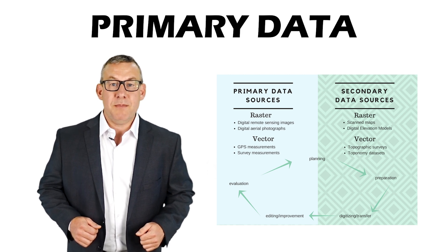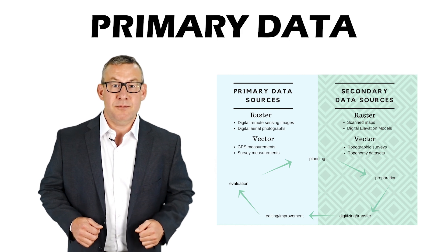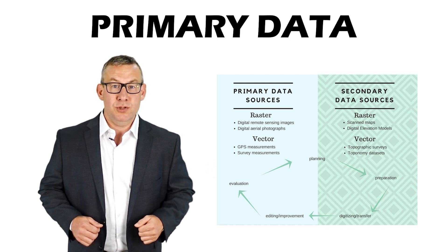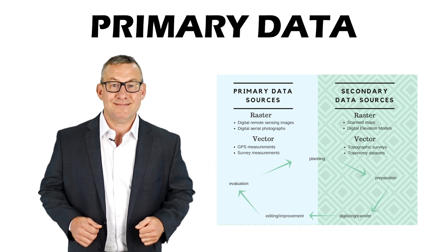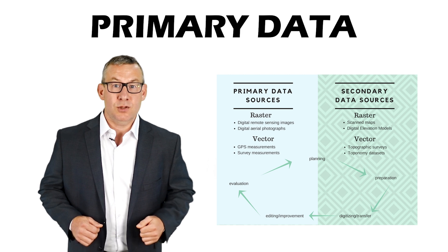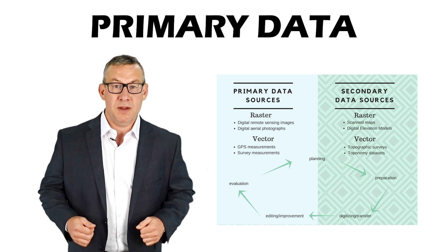Primary Data is data collected for the first time for a GIS project. Primary Data may include new digitization from remote sensing or aerial photographs. Primary Data can also include new GPS or survey measurements.